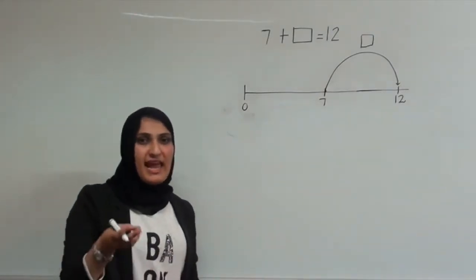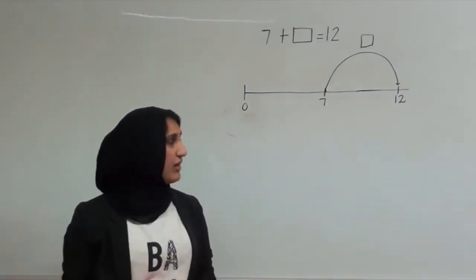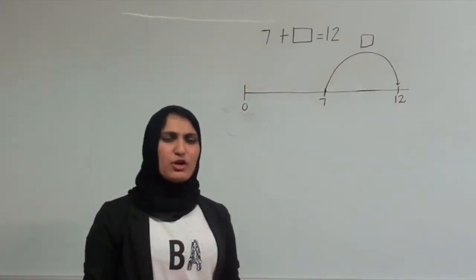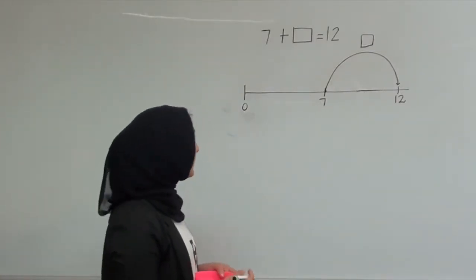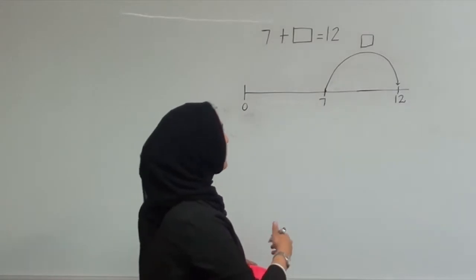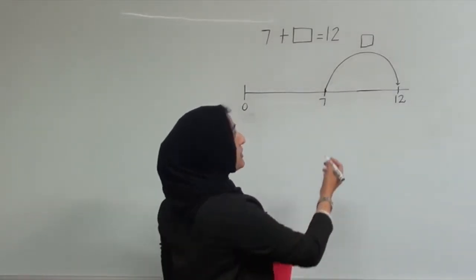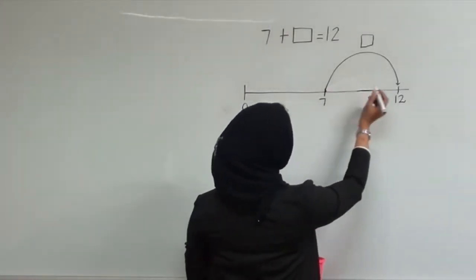One way of doing it is to say 8, 9, 10, 11, 12. But that's very long. And we don't want to be counting on our fingers. So I want to jump through 10. And for me to do that, I need to add 3.